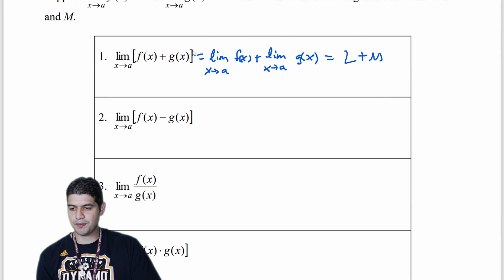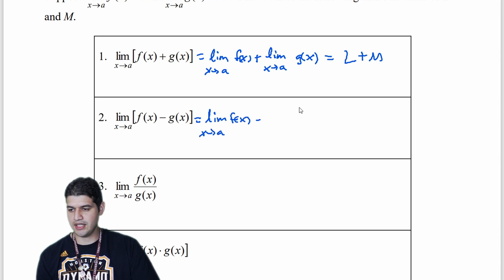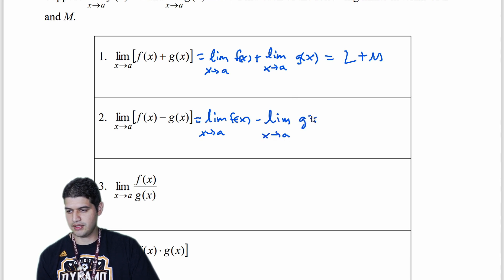In a very similar problem, we can distribute that limit again. So the limit as x approaches a of f of x minus the limit as x approaches a of g of x. In this case it's going to be L minus M.